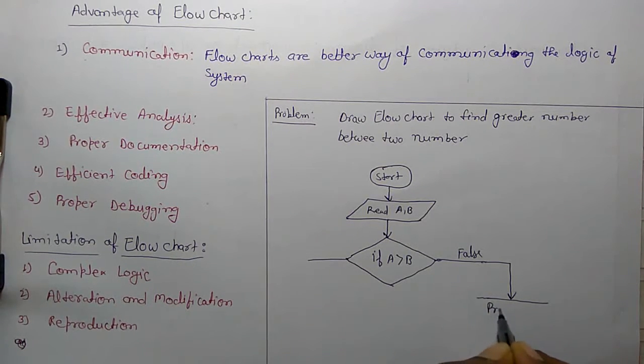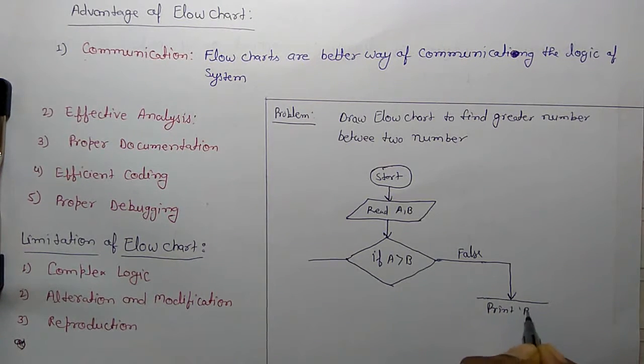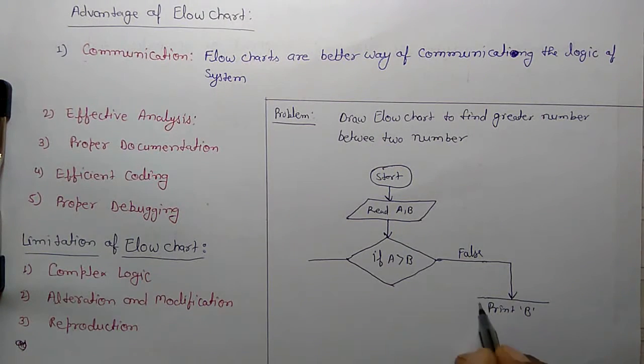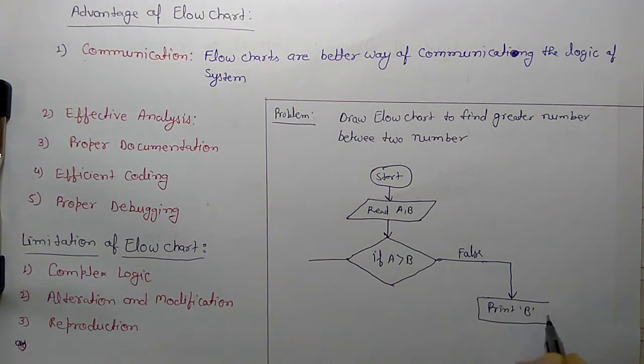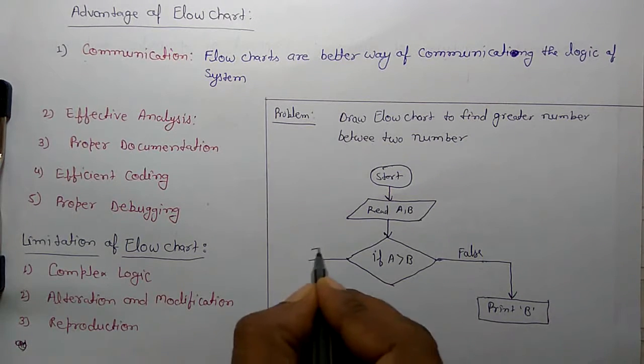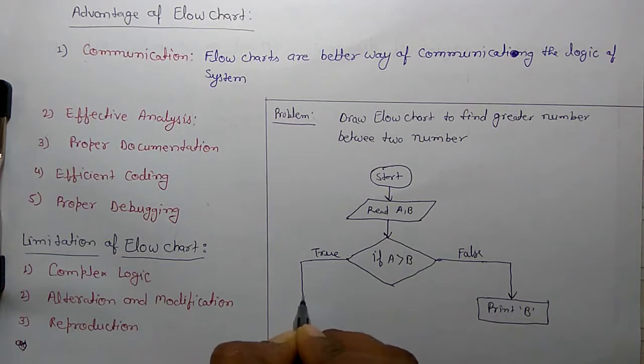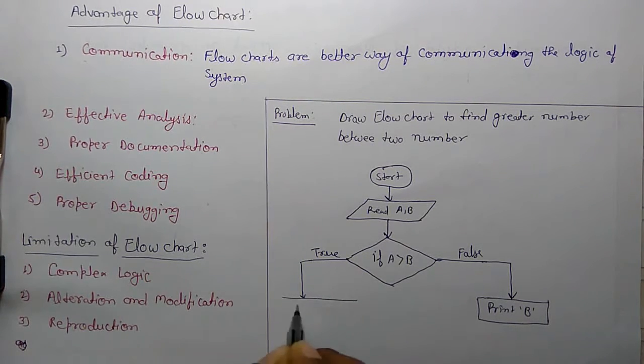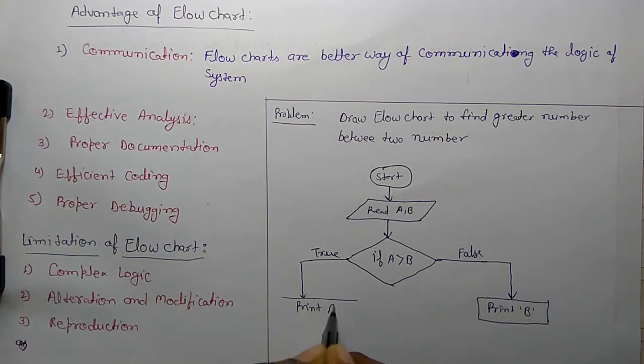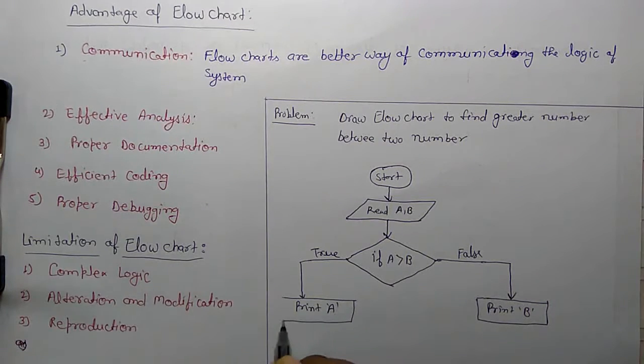If a is not greater than b, so print b. And if true, then print a, because a is greater than b.